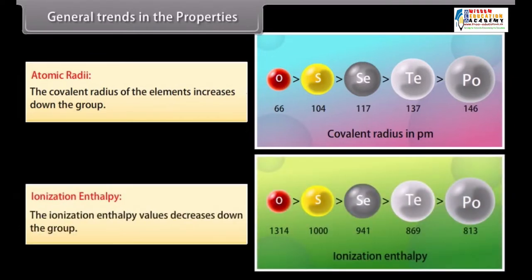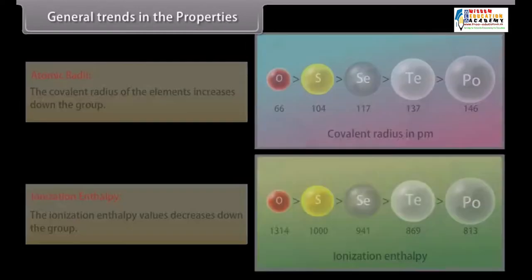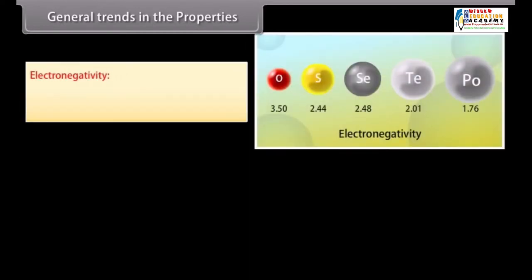The ionization enthalpy values decrease down the group. Electronegativity. Electronegativity of these elements decreases down the group.